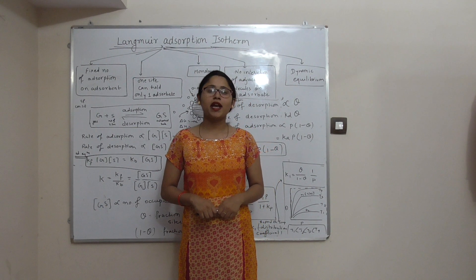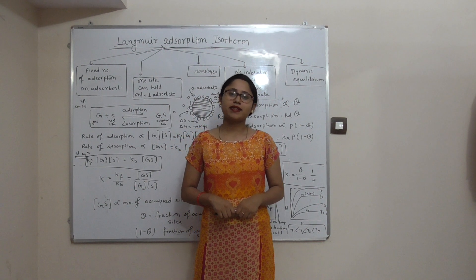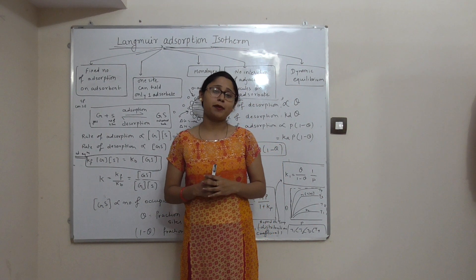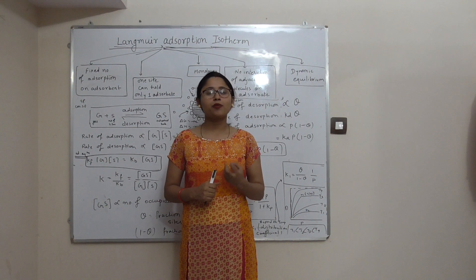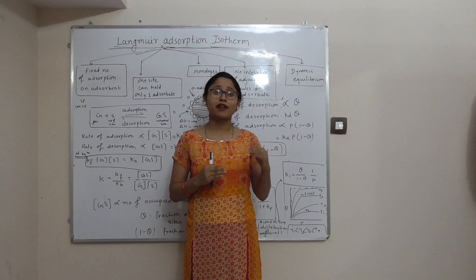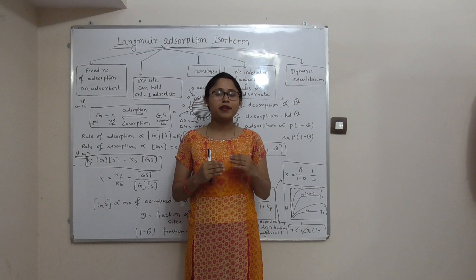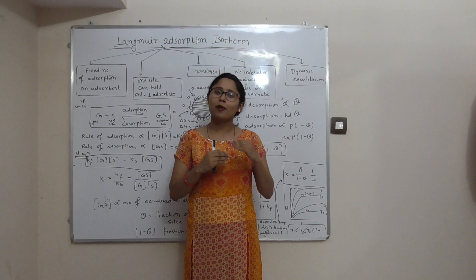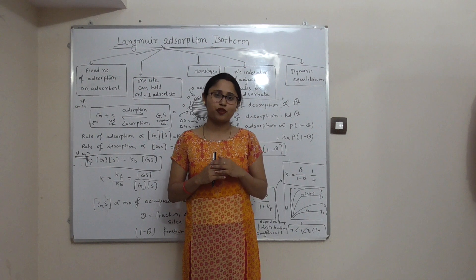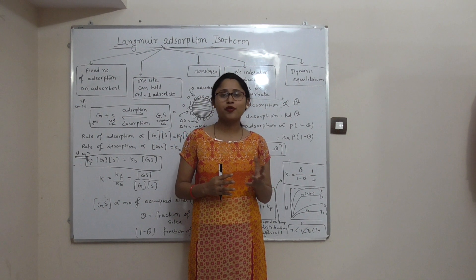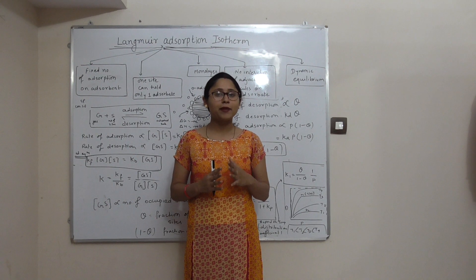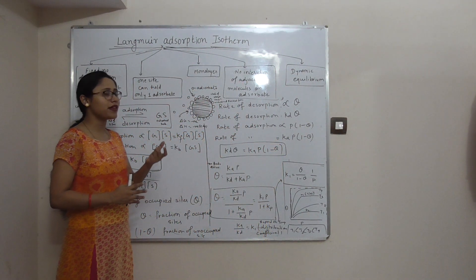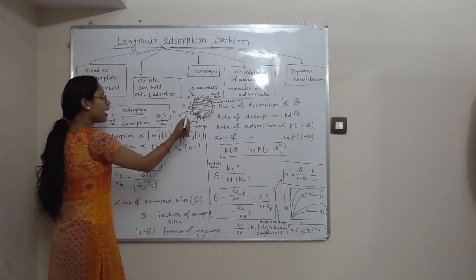Hello everyone, I am Smriti and you're watching me on Imagine Turds. Today's lesson is based on the Langmuir adsorption isotherm. Adsorption is a surface phenomenon — it's a consequence of surface energy. When a solid and liquid surface interact with molecular species or ions, they form some type of covalent or ionic bond. That process is called adsorption. Adsorption can be of two types: physisorption and chemisorption, but in this lesson we will focus on the Langmuir adsorption isotherm.